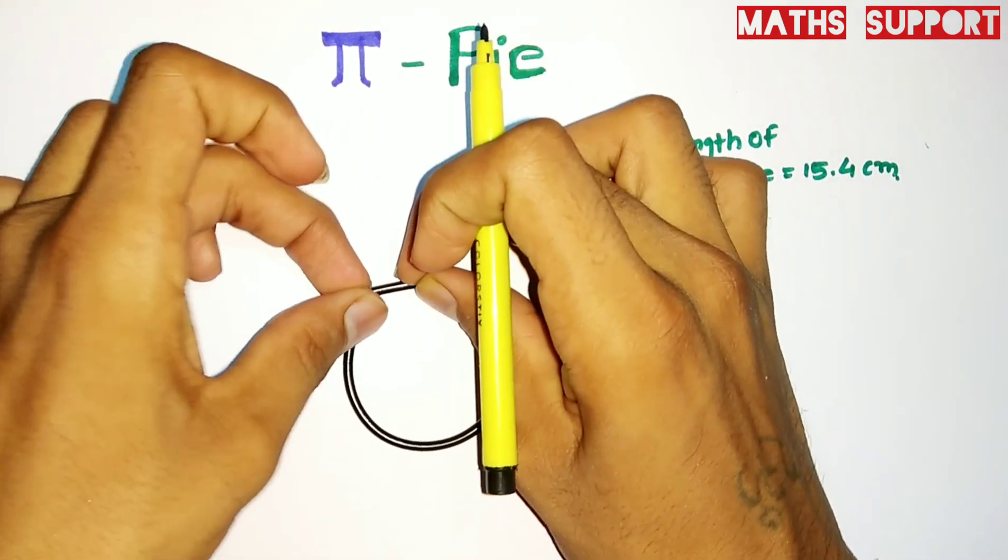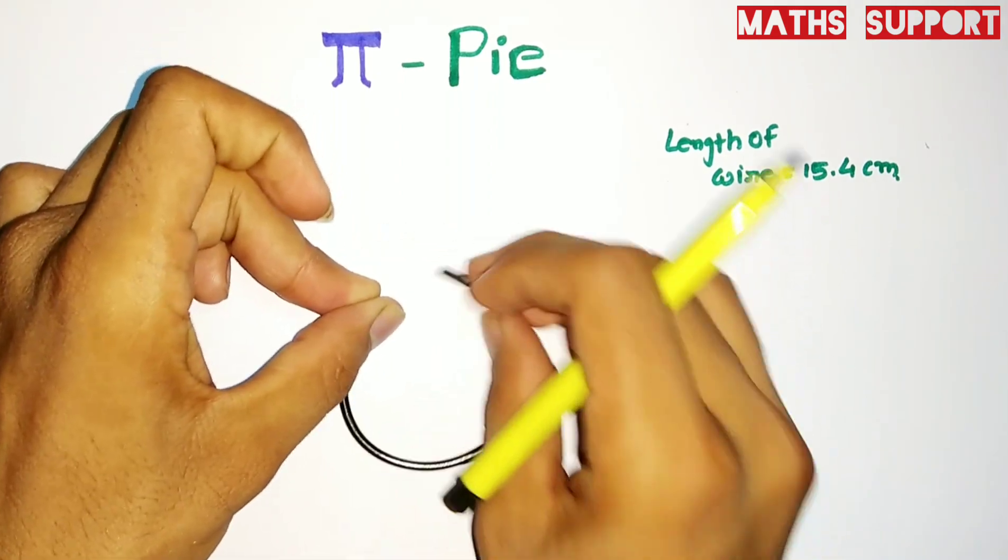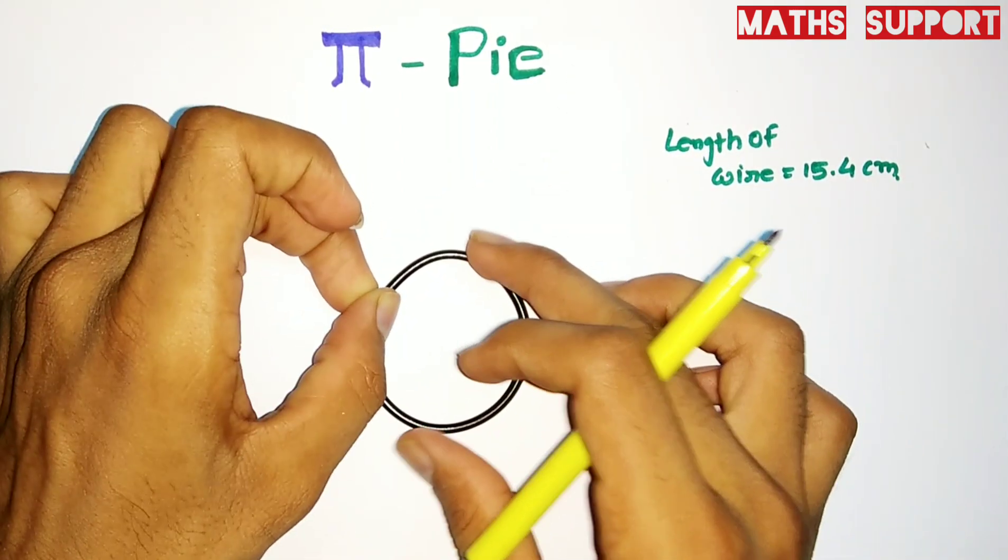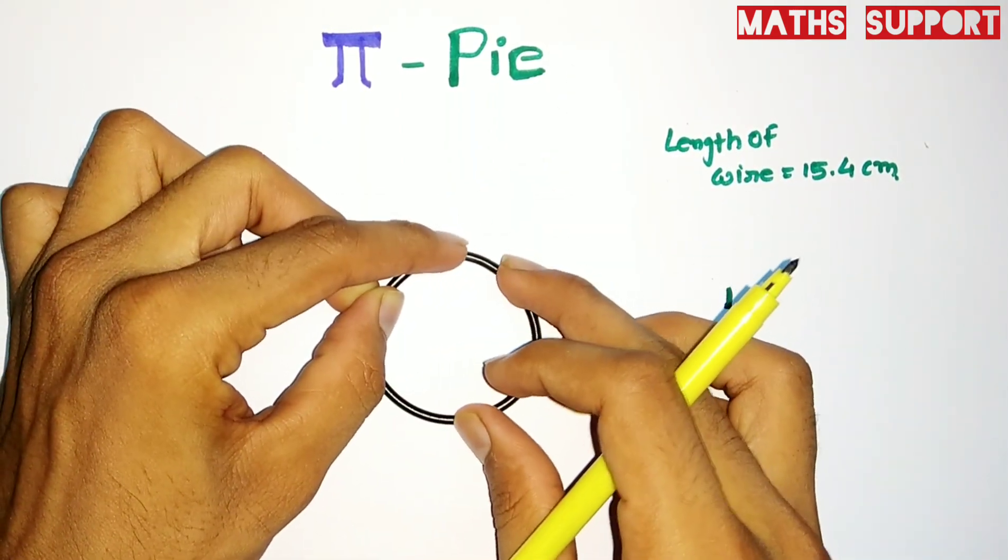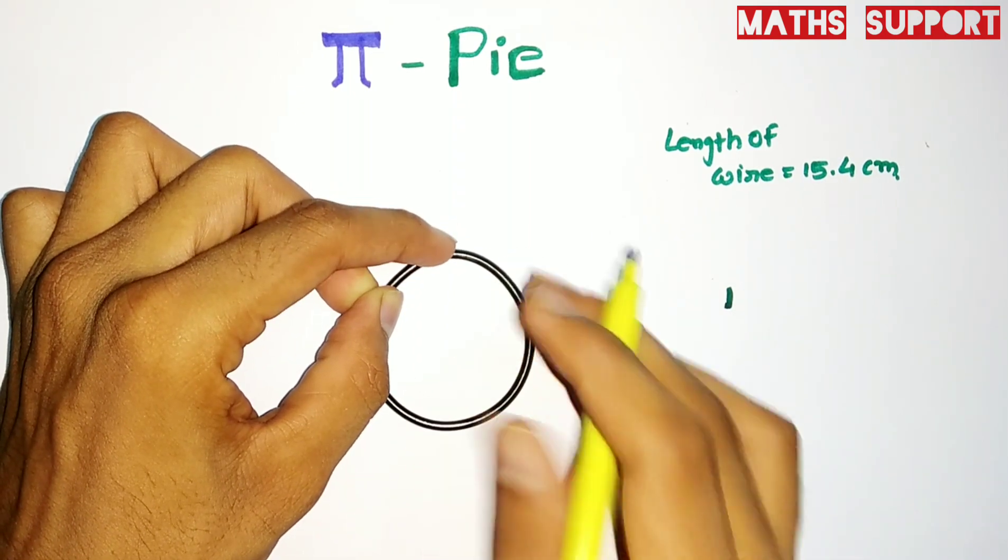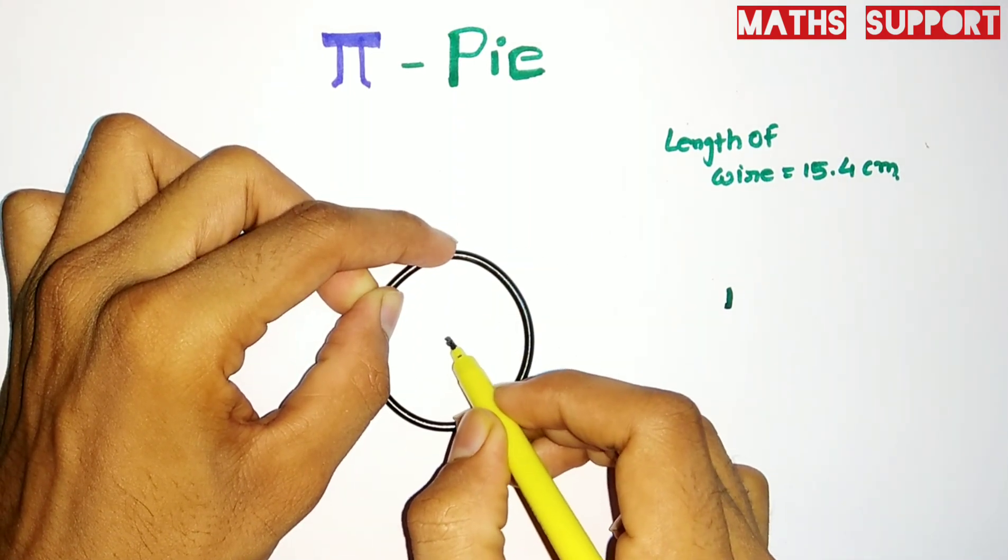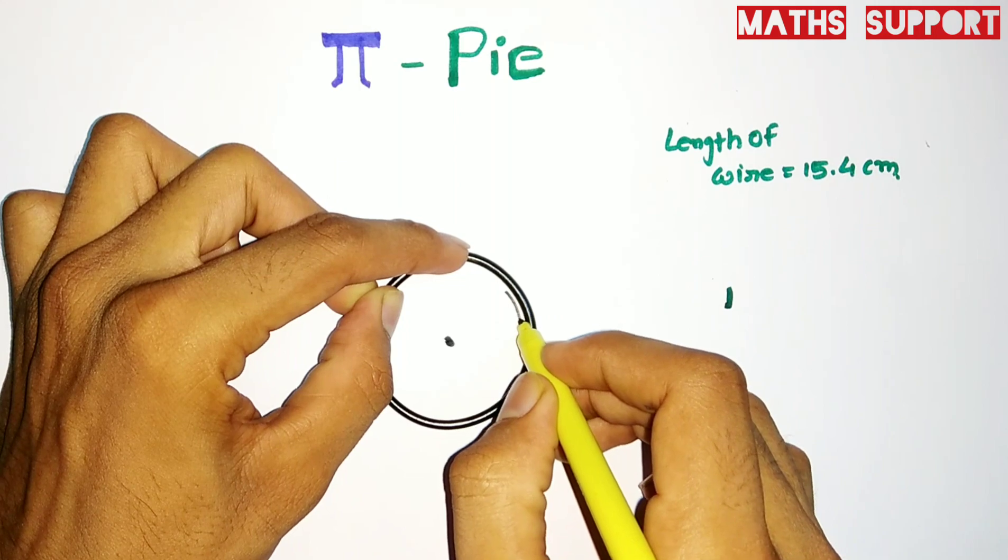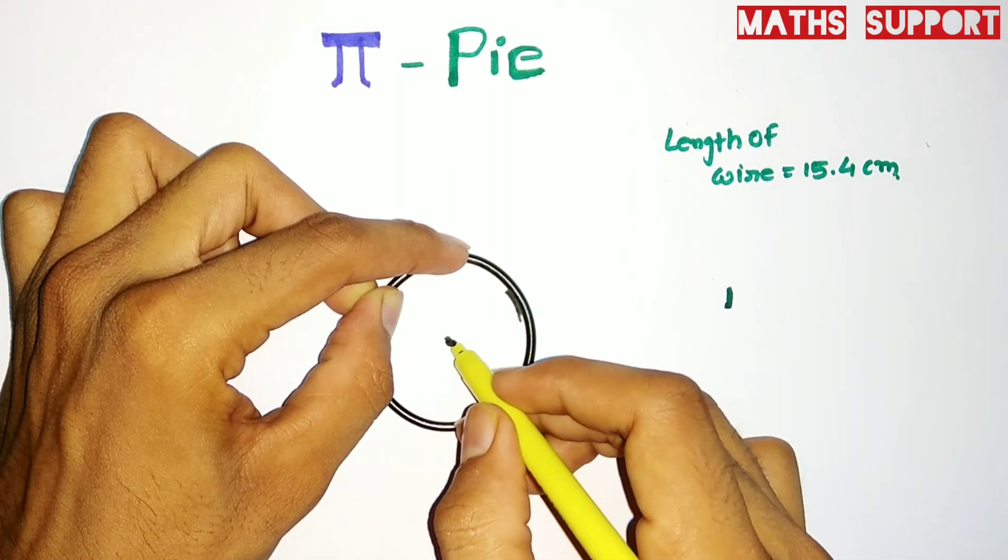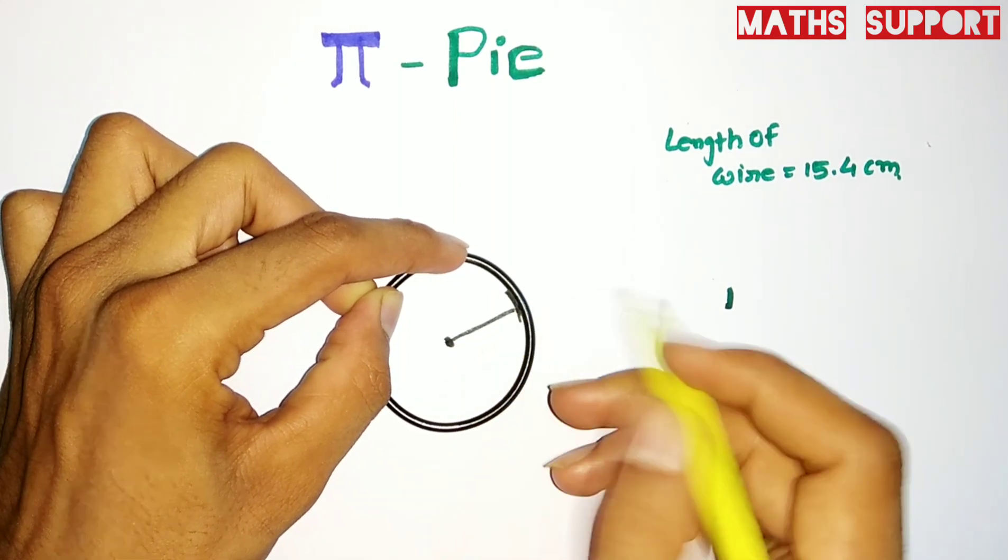I'm marking the approximate center somewhere here, and the radius to this point. This will be my radius.